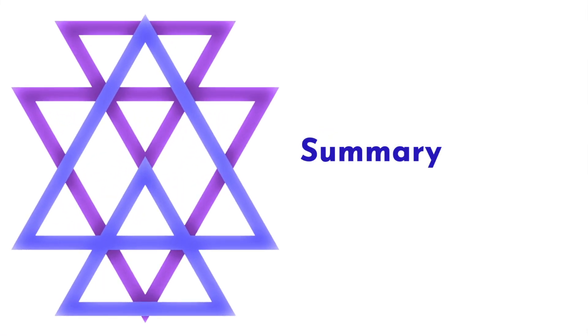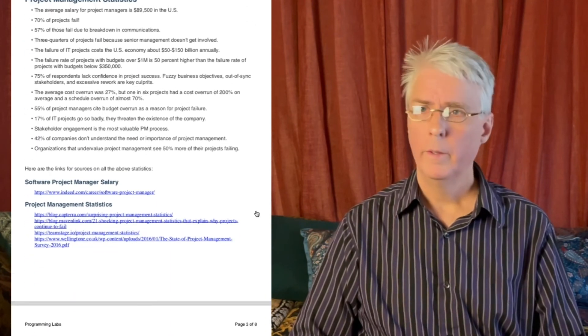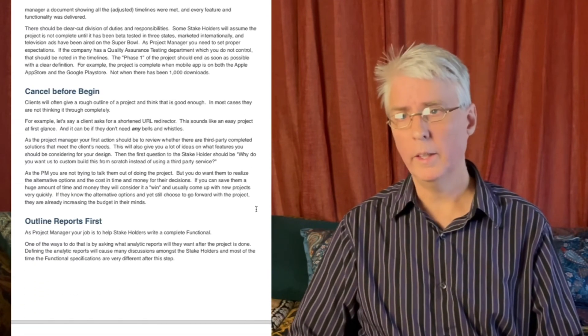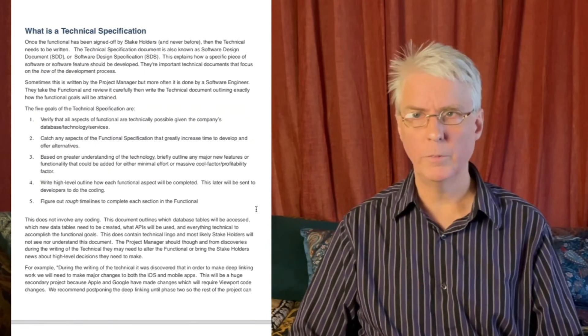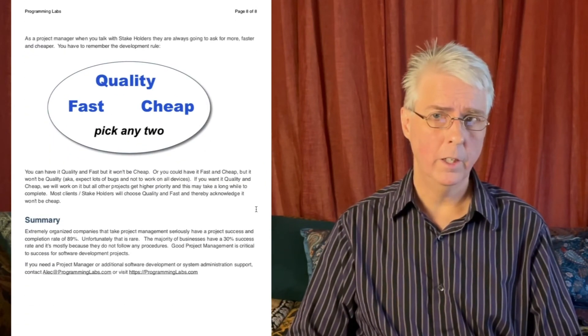In summary, extremely organized companies have a success rate of 89% on their software development projects. Unfortunately, that is rare. The majority of companies have only a 30% success rate because they don't follow any processes or procedures. I've uploaded to my Programming Labs server the functional and technical templates, as well as this article in PDF form — the link to download is below in the description. If you would like more information on any specific area, please let me know in the comments below. Like if this has helped, and subscribe for more on the business of programming.